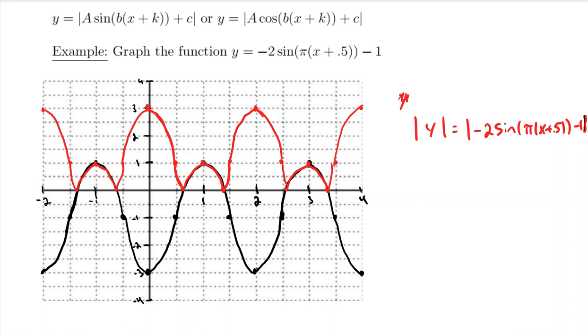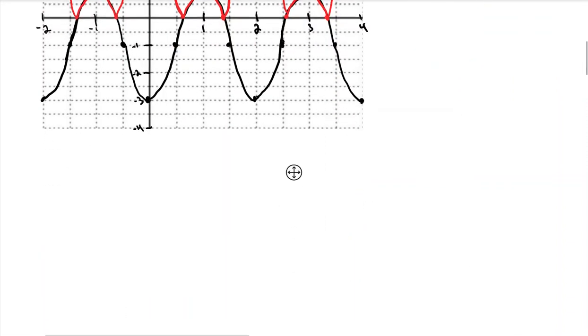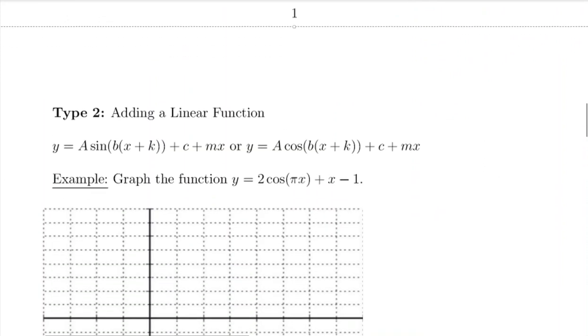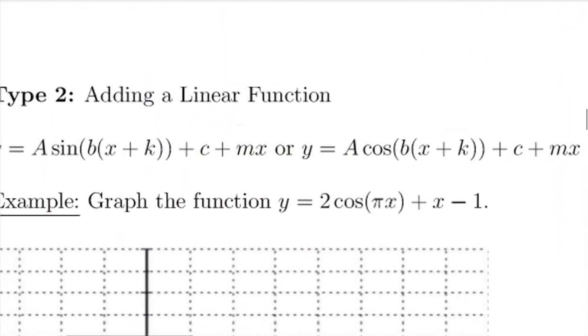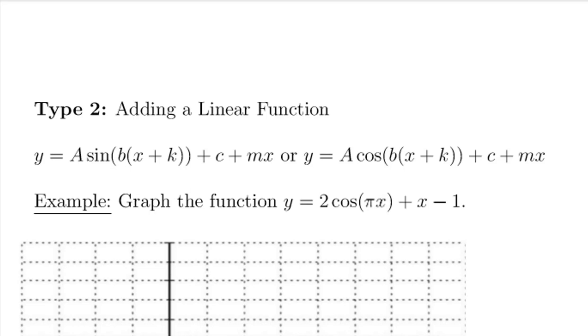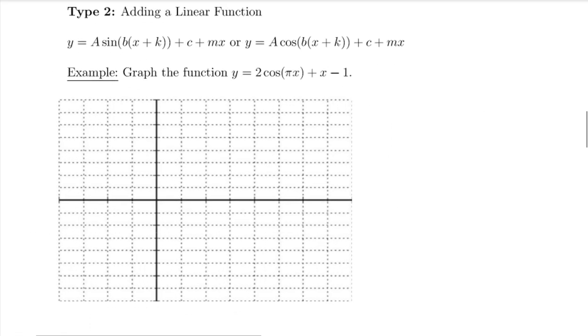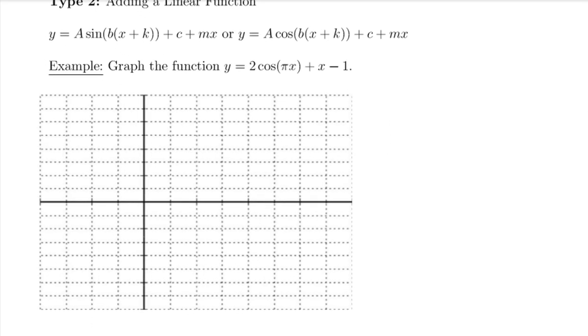Now, the second type of function I want to tackle isn't dealing with absolute values. But what happens if I'm adding a line to them? So I'm going to take my transform graph of sine, but I'm going to add now a factor mx to it, kind of like a line. So the example I'm going to look at is graph 2 cosine of pi x plus x minus 1.